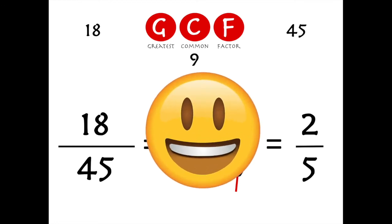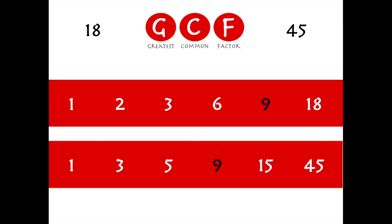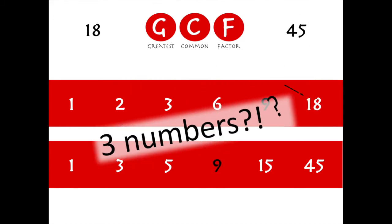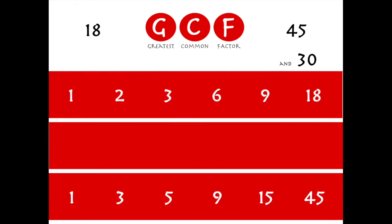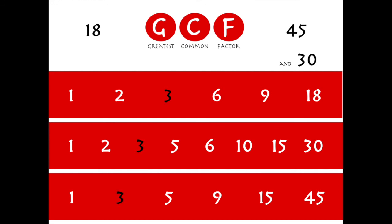We already know the greatest common factor of 18 and 45 is 9, but what if we have three numbers? For example, what's the greatest common factor of 18, 45, and 30? No problem — we'll just add another line. We already know the factors of 18 and 45, so let's list them for 30: 1 and 30, 2 and 15, 3 and 10, 5 and 6. Now compare the lists — the greatest common factor of all three is 3.